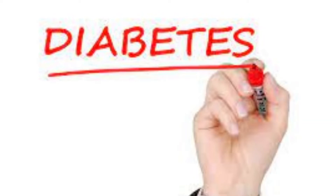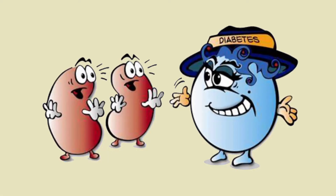The main cause of diabetes varies by type, but no matter what type of diabetes you have, it can lead to excess sugar in the blood. Too much sugar in the blood can lead to serious health problems. Chronic diabetes conditions include type 1 diabetes and type 2 diabetes.